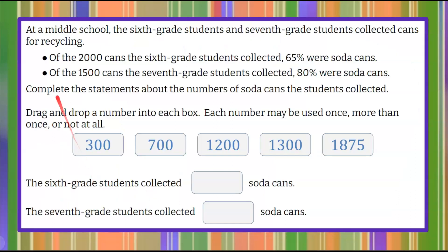Here's our question today. At a middle school, the 6th grade students and 7th grade students collected cans for recycling. Of the 2,000 cans the 6th grade students collected, 65% were soda cans. Of the 1,500 cans the 7th grade students collected, 80% were soda cans. We're asked to complete the statements about the numbers of soda cans the students collected.